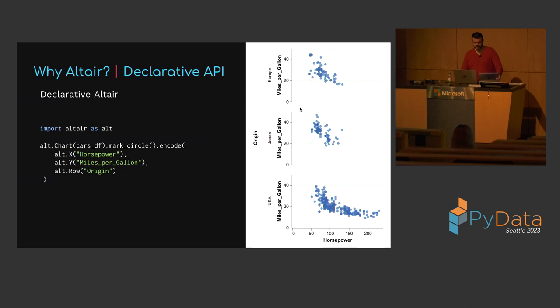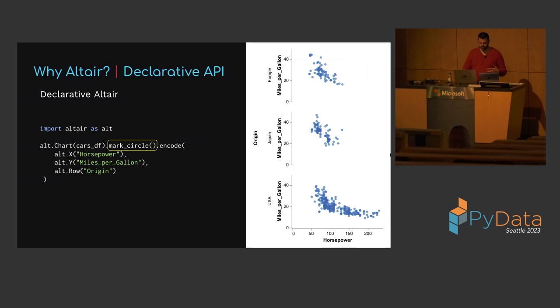Our first example of Altair's declarative API is this faceted scatter plot. We're plotting horsepower versus miles per gallon and faceting by country of origin. In a declarative visualization API like Altair's, the code you write specifies the requirements for the final chart. The details of how to build a chart that satisfies these requirements is left up to the library. We'll wrap the cars dataframe in an Altair chart, create a circle mark, and encode horsepower as x position, miles per gallon as y position, and origin as the subplot row.